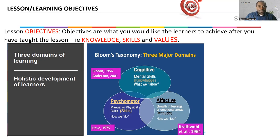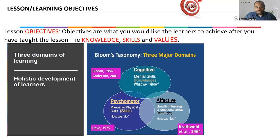Learning objectives — in some institutions referred to as lesson outcomes — have to do with what you want learners to take away from the lesson, what you want them to achieve after you have taught them. For each single lesson there have to be certain objectives set. At the end of the one hour with learners, this is what you desire them to be able to do based on the knowledge, skills, and values they have gathered from that lesson.